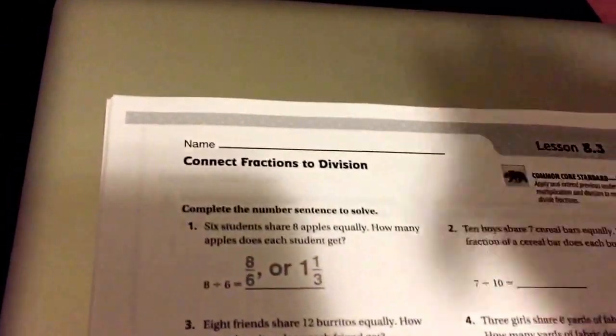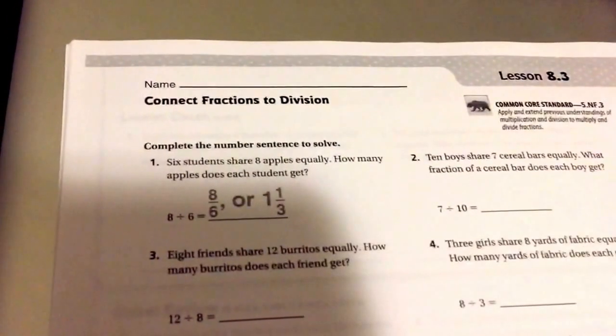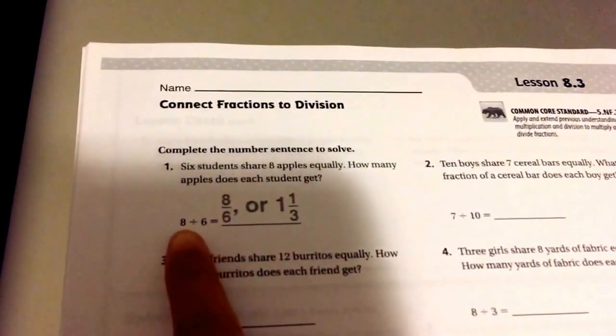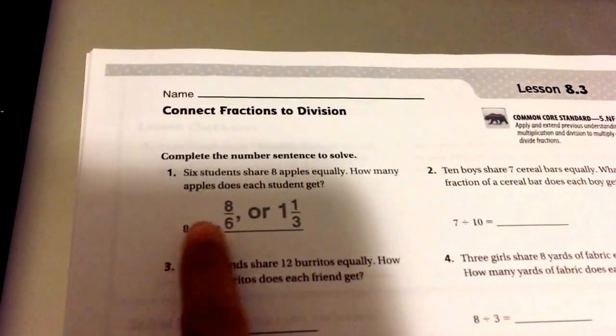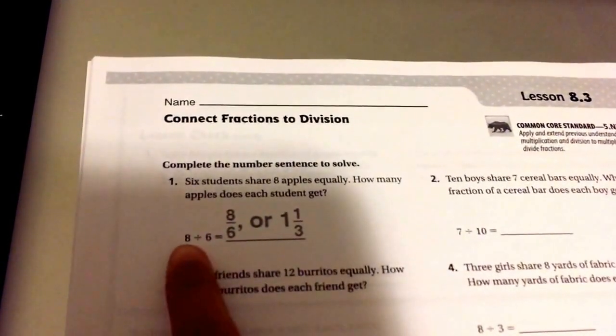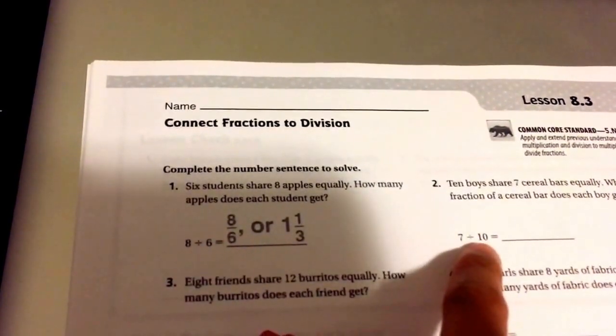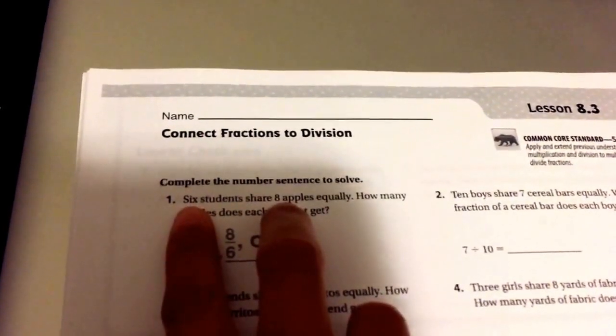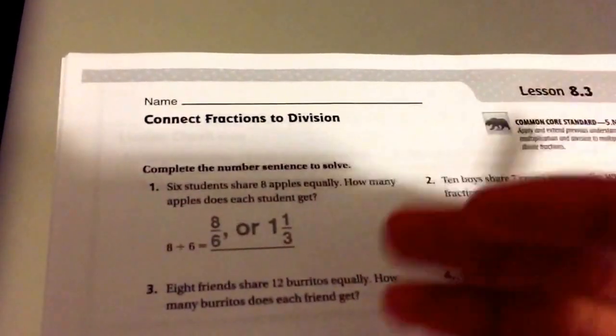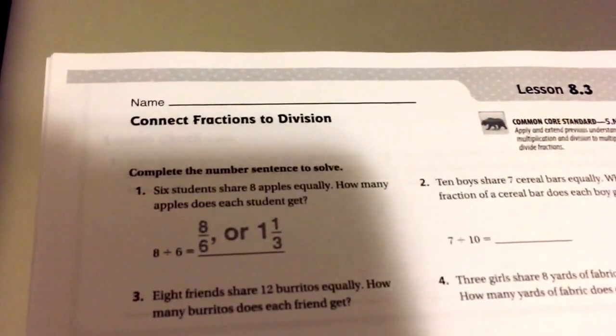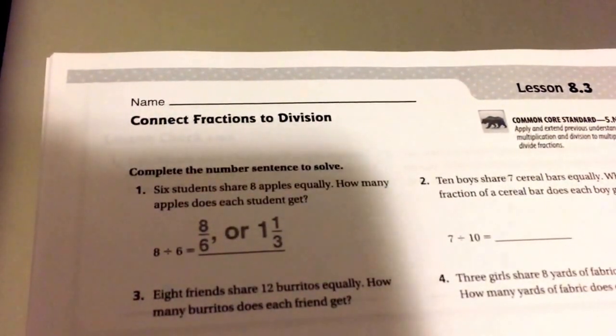Now, we're going to move on to our new lesson, which is connect fractions to division. Now, what I don't like about this lesson is that they kind of give you the equation already for each of them. One thing I want you to notice is sometimes the numerator is larger, I mean the first number is larger than the second number. Sometimes the first number is smaller than the second number. So here, 8 is bigger than 6, here 7 is less than 10. So when you look at these numbers, 6 and 8, I don't want you to think it has to be 6 over 8, or it has to be 8 over 6. I want you to actually think about what is your dividend, what is your total, what are you breaking apart.